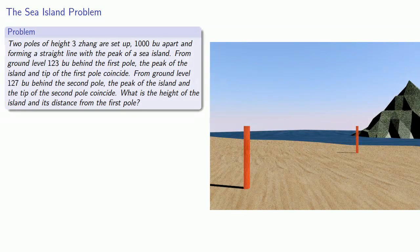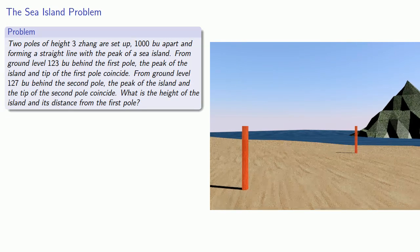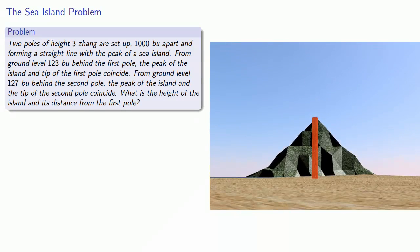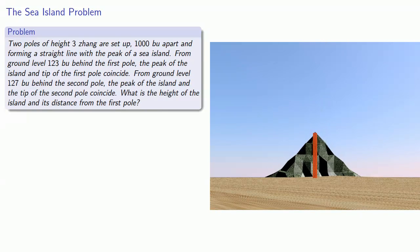The title problem concerns the following situation. Two poles of height 3 zhang are set up 1000 bu apart and form a straight line with the peak of a sea island. From the ground level 123 bu behind the first pole, the peak of the island and the tip of the first pole coincide. From the ground level 127 bu behind the second pole, the peak of the island and the tip of the second pole coincide. What is the height of the island and its distance from the first pole?